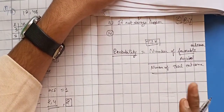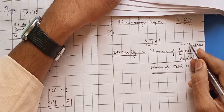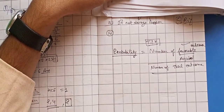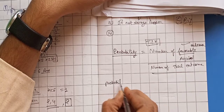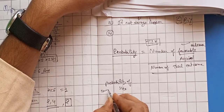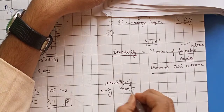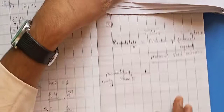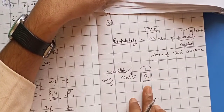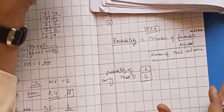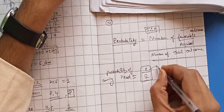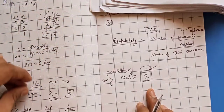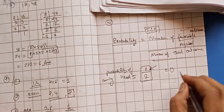For example, the probability of a coin landing heads: the favorable outcome is 1 (heads), and the total outcomes are 2 (heads or tails). So probability = 1 by 2, which is 50%. If probability is 0, the event is impossible; if probability is 1, the event is certain.